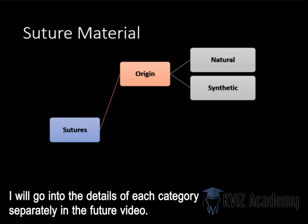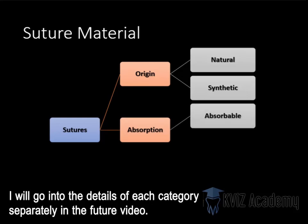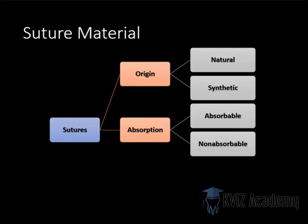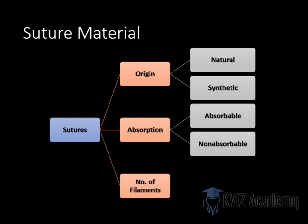Then we have classification based on absorption: resorbable and non-resorbable — absorbable and non-absorbable mean the same thing. Absorbable means after we tie the wound, we leave it there and with time it will dissolve in the body, either by an inflammatory process or by hydrolysis. Non-absorbable means we tie the wound edges and leave it — if you see 10 years later, it will still be there. Then we have classification based on number of filaments: multifilament, like normal thread with many filaments making up one single thread, and monofilament, where there is only one strand.